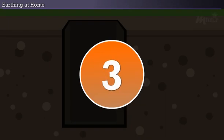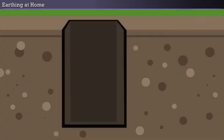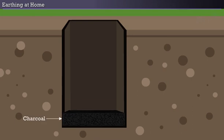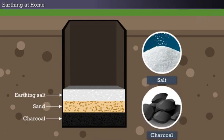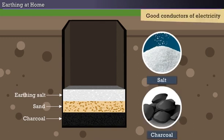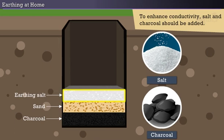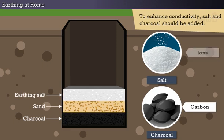Step 3: After excavating the pit, put a layer of charcoal, sand, and earthing salt in the pit. Here, both salt and charcoal are good conductors of electricity. In order to enhance conductivity, salt and charcoal should be added as charcoal contains carbon and salt contains ions.